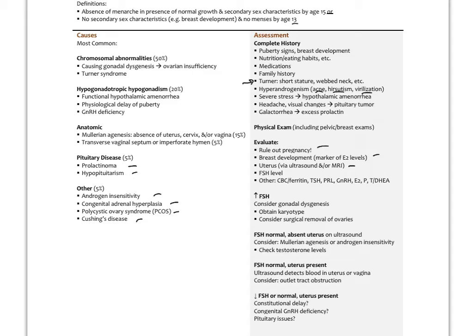Workup includes ultrasound or MRI to check the uterus for scarring or other issues, and labs: FSH, anemia panel, thyroid, prolactin, GnRH, estradiol, progesterone, and testosterone. With increased FSH, consider gonadal dysgenesis and obtain a karyotype to rule out Turner syndrome or another genetic problem. If 45X mosaicism, consider surgery to remove the ovaries. If FSH is normal with absent uterus on ultrasound, consider Müllerian agenesis or androgen insensitivity and check testosterone. If FSH is normal and the uterus is present, ultrasound can detect blood in the uterus or vagina and we might consider outlet tract obstruction. If FSH is low or normal with the uterus present, consider constitutional delay, pituitary deficiencies, or congenital GnRH deficiency.